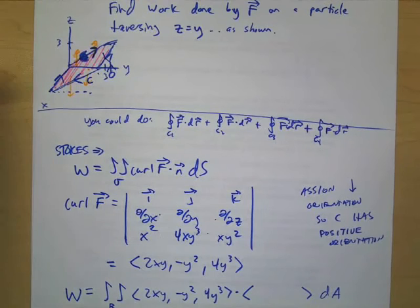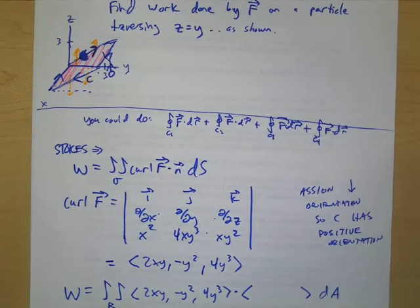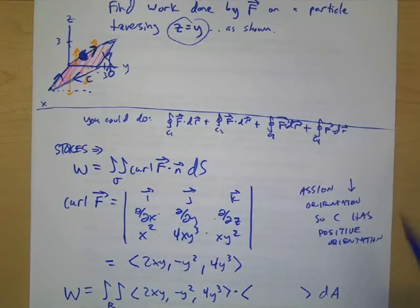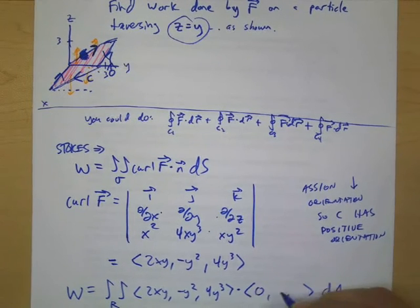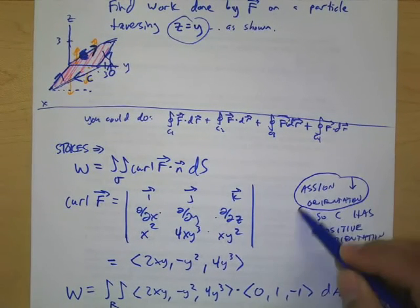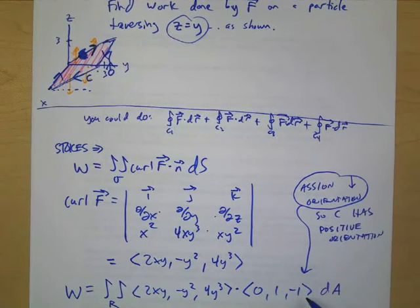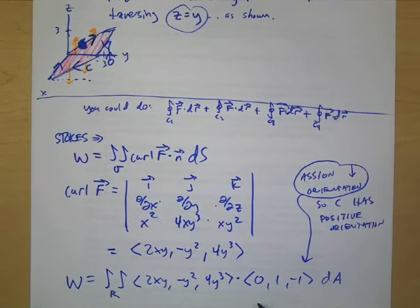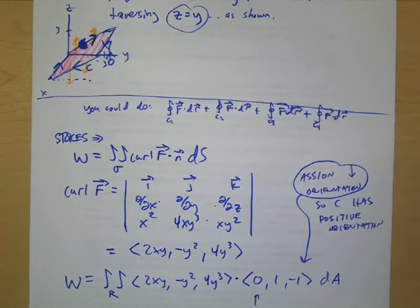But now if we assign negative orientation so our normal vectors are pointing down, you can imagine basically you're upside down now. Does that make sense? So if that's the case, then what do I use for the normal vector here? We have Z equals Y.